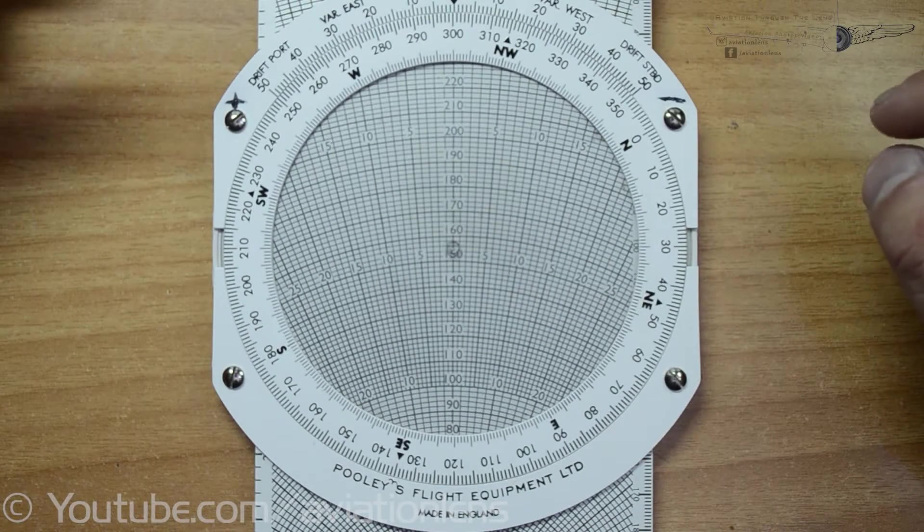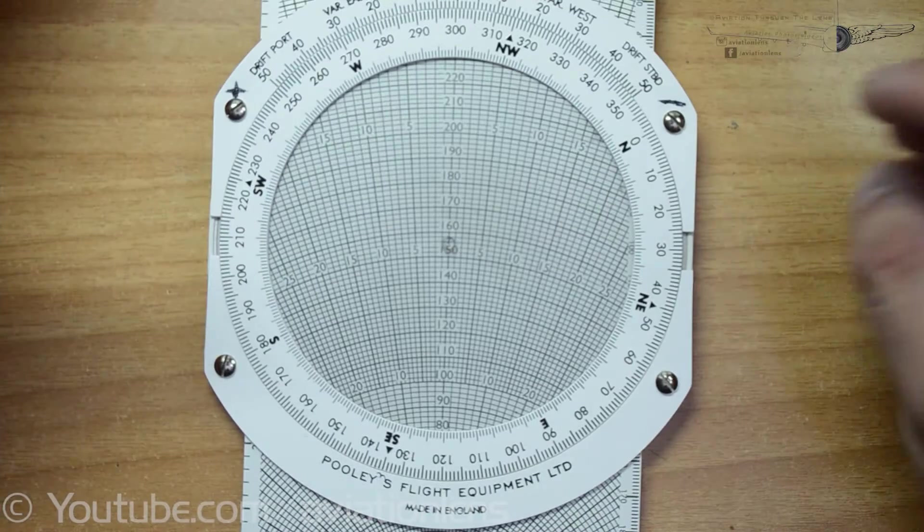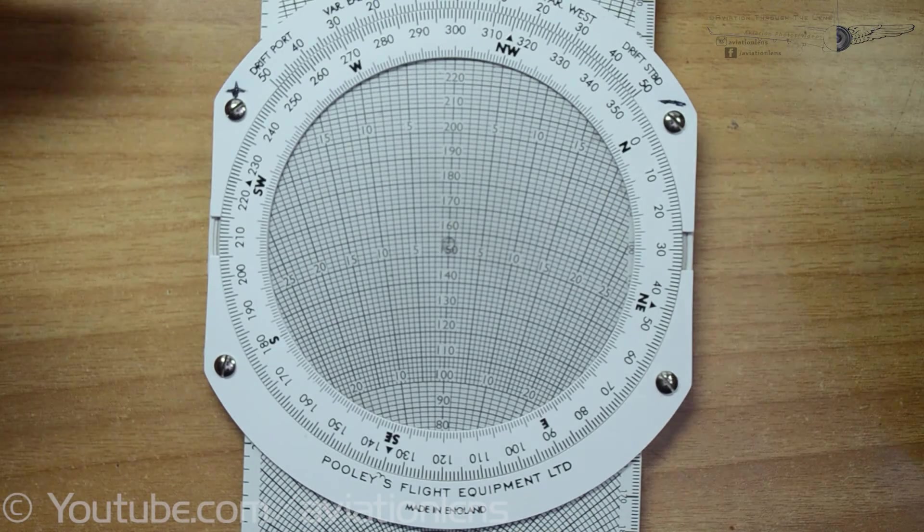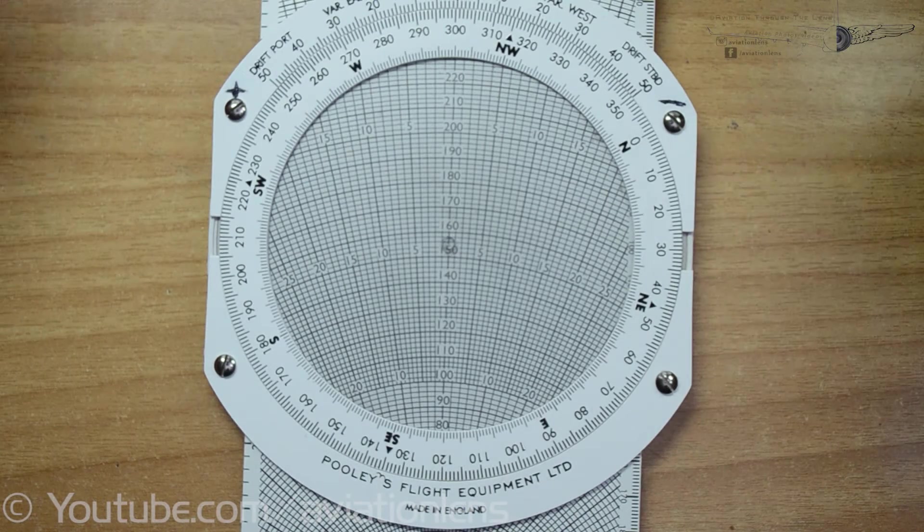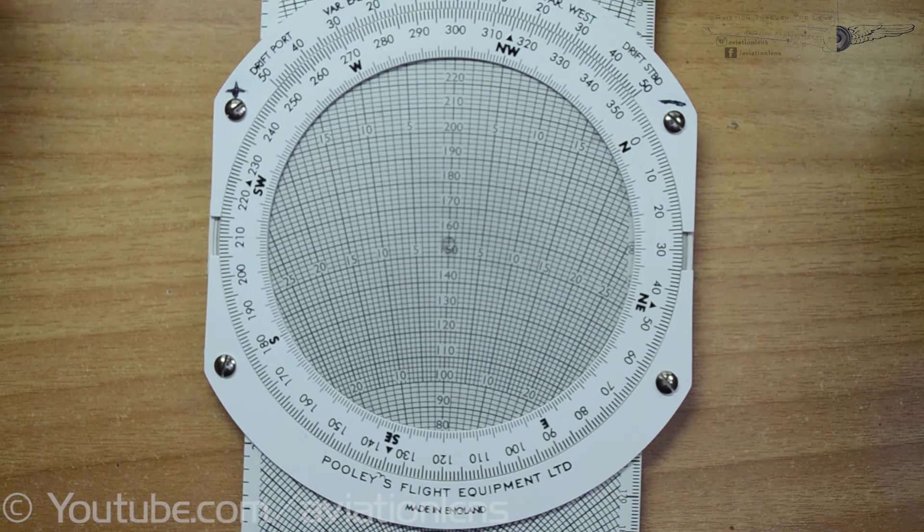In this video I'm going to show you maybe the most important function of the wind side of the CRP5, and this is how to calculate your heading and your ground speed given TAS, track, and wind direction and velocity.